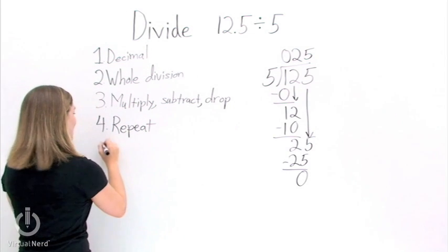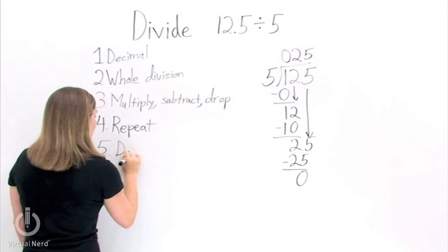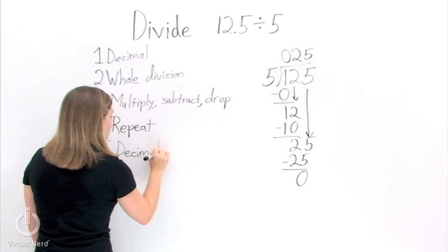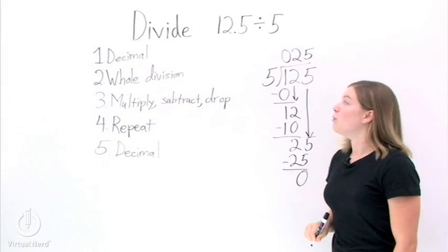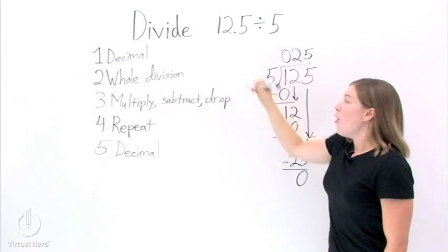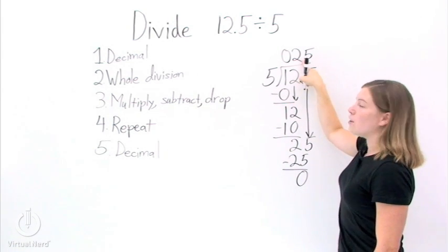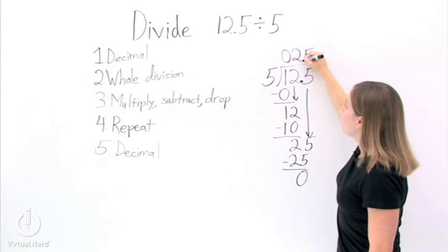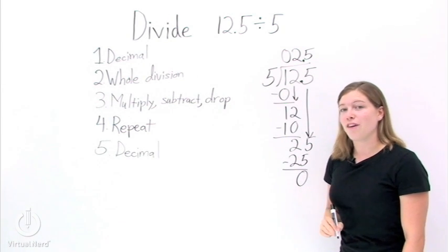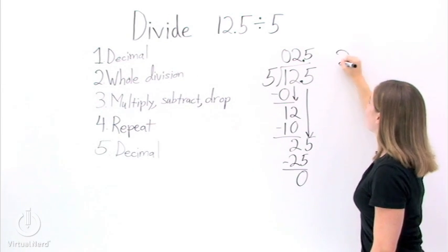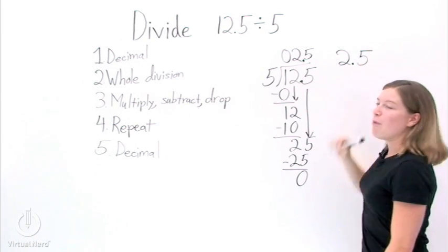No, we got one last step. Step 5 is to put back in that decimal that we took out earlier. To do that, all you do is look where the decimal used to be at the top. Put it back into your dividend, and then bring it straight up and put it in your answer. So our answer for this problem, 12.5 divided by 5, is just 2.5.